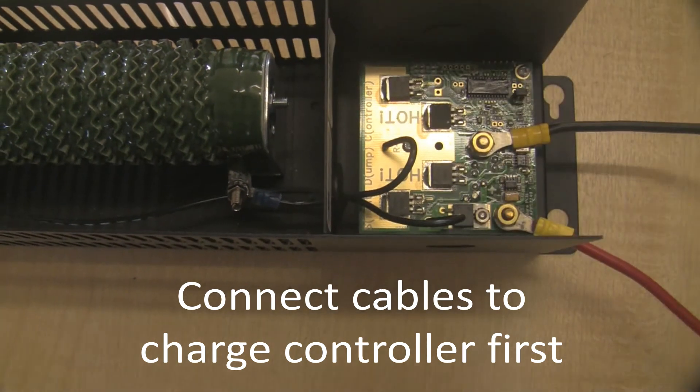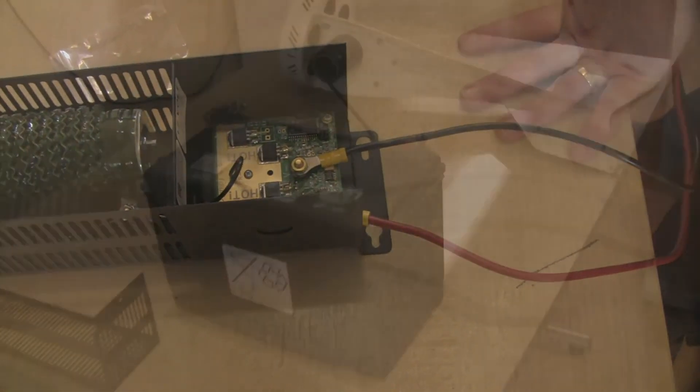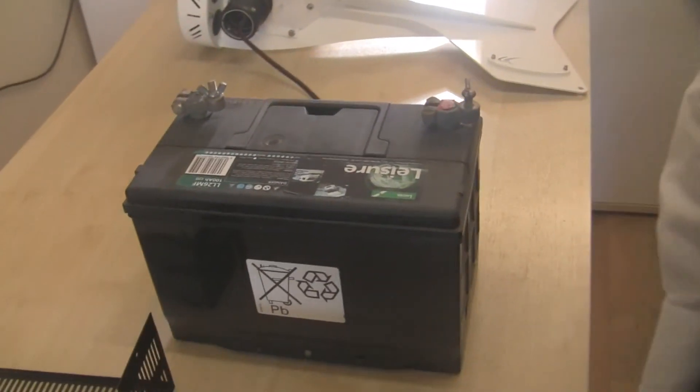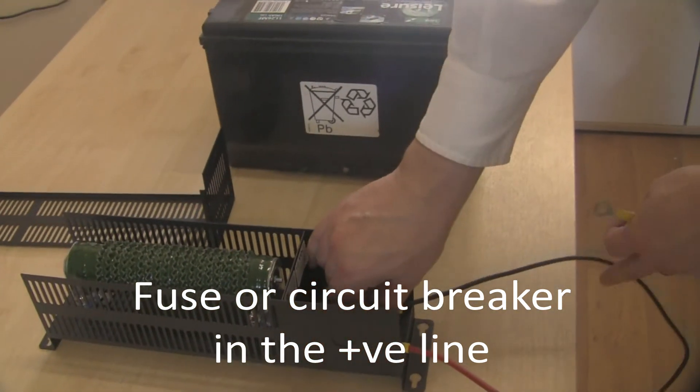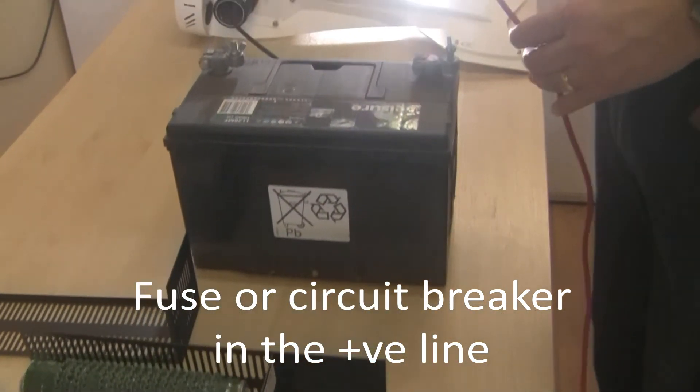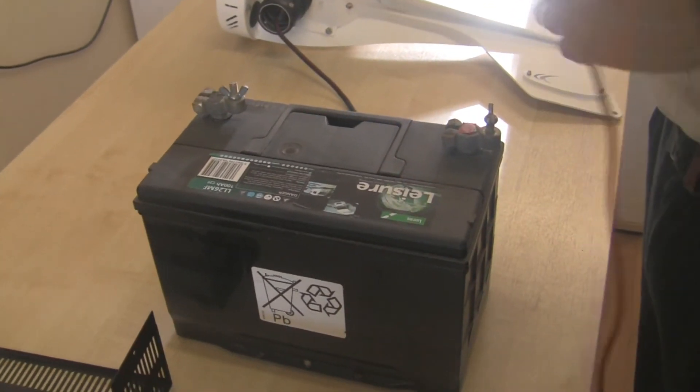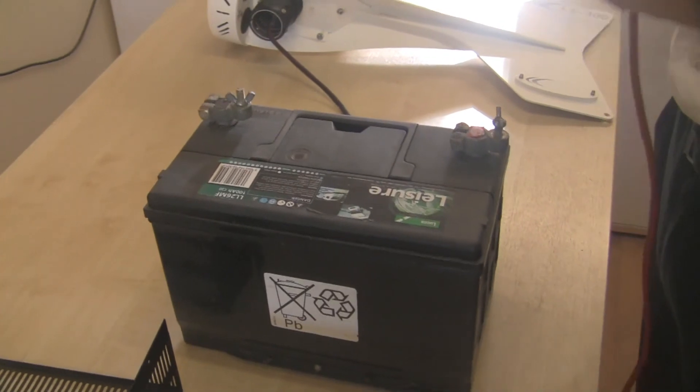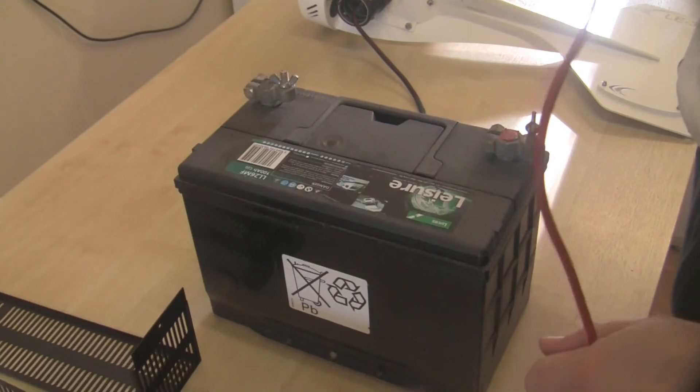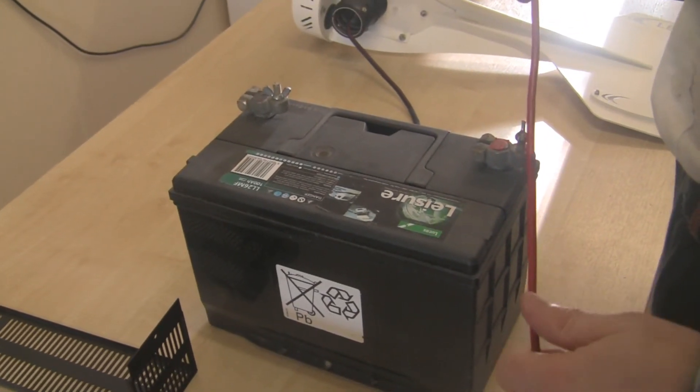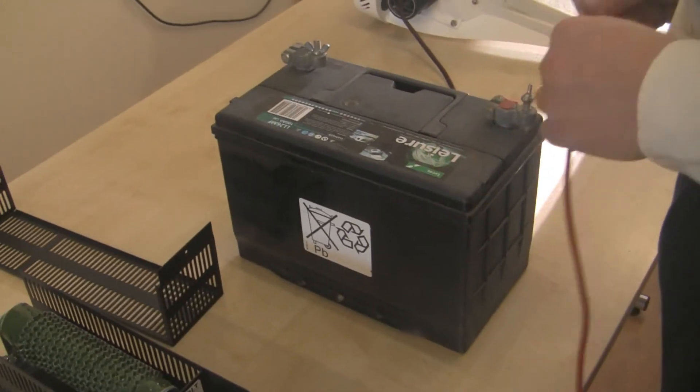And also notice that I've connected the cables to the charge controller first. So usually if this was a permanent installation, we would be using a fuse or a circuit breaker which is suitably rated in the positive line between the battery and the charge controller. And that's simply a good thing to do. It's good electrical practice to do that, and it prevents the cables from melting or becoming damaged due to over current. In this case, because it's just a demonstration, I'm literally going to connect this up quite quickly.